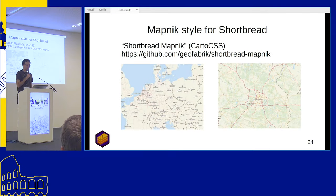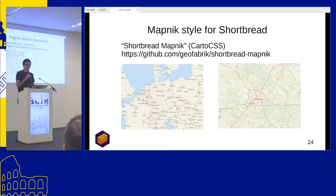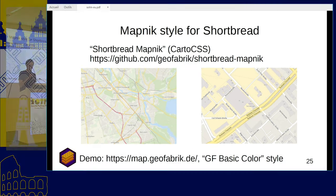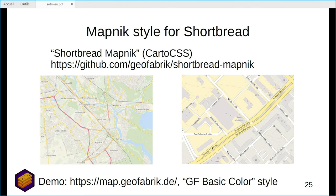This is the Shortbread MapNIC style we developed. It's a bit inspired by OSM Carto from a couple of years ago but has a different coloring. It's available on GitHub, and you can see it at map.geofabrik.de — there's a style called GF Basic Color, which is pretty much the same one.